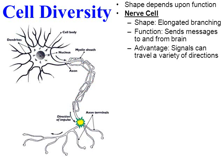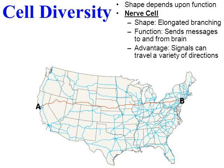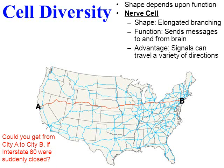But if all branches are damaged and no messages can be sent to or from the brain, that person could suffer from some sort of paralysis. A good analogy is a map of the United States — if you wanted to drive from City A to City B and Interstate 80 was suddenly closed, you could still get there by going a different direction using one of the alternate routes. The same works with nerve cells — if some branches have damage, there's a good chance the message can still get to and from the brain by traveling different directions around other branches.